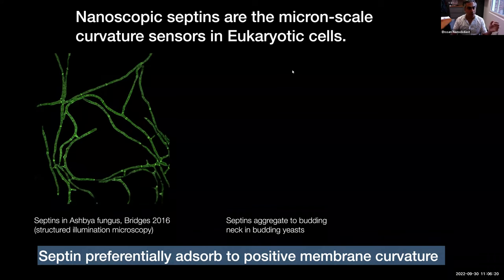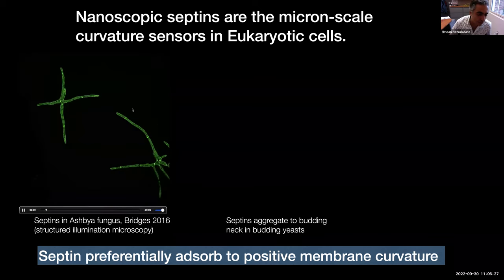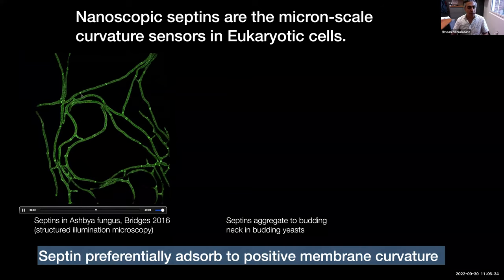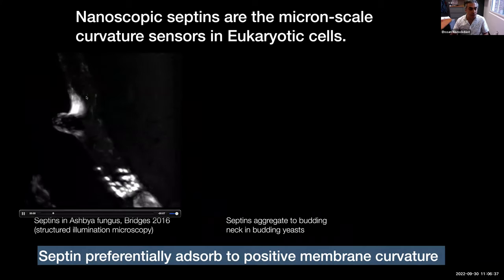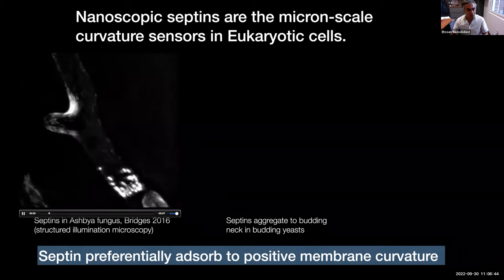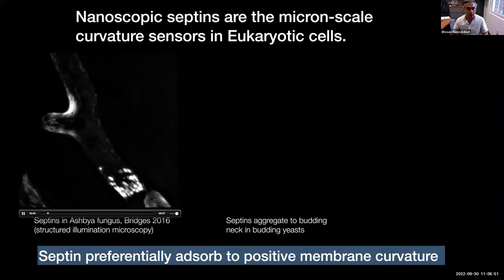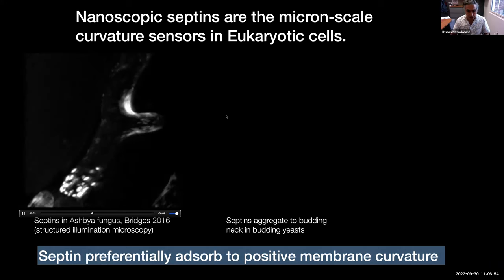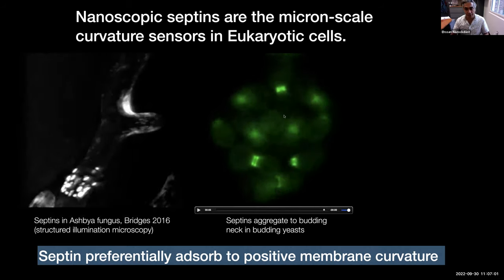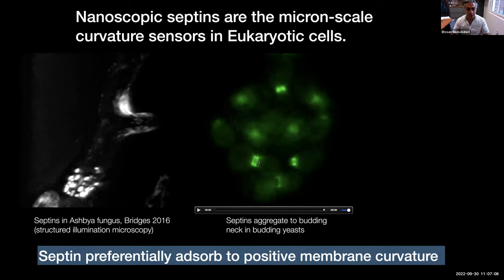The example shown is the Ashbya fungus, where wherever you get branches you see accumulations of septins around those branch areas of higher curvature. You can see the localization of septins to areas of high positive curvature. Septin accumulates inside these structures at areas of high positive curvature. Septins are also critical in budding yeast: as the cell divides and forms a neck, septins accumulate in areas of high positive curvature there as well.